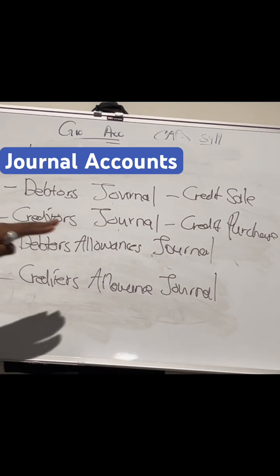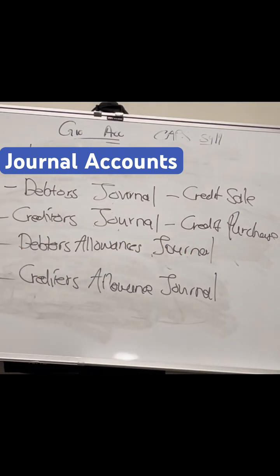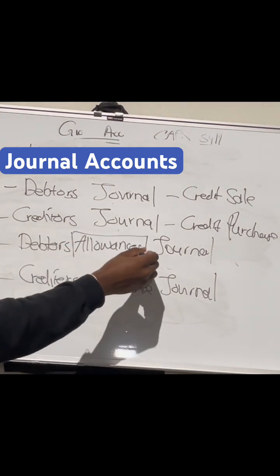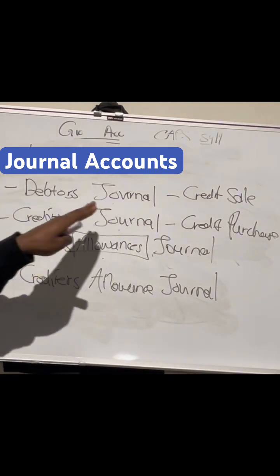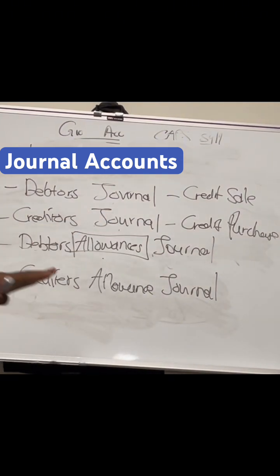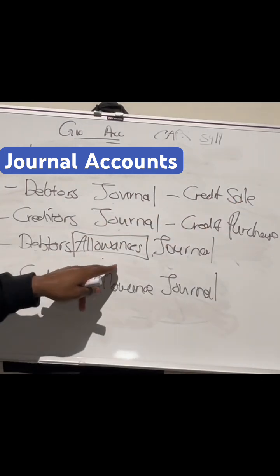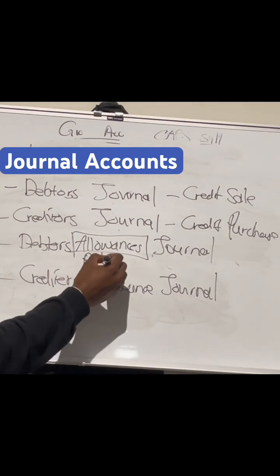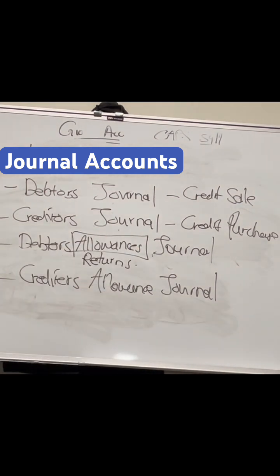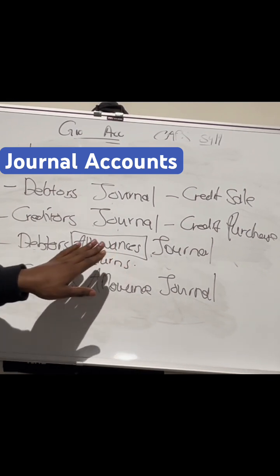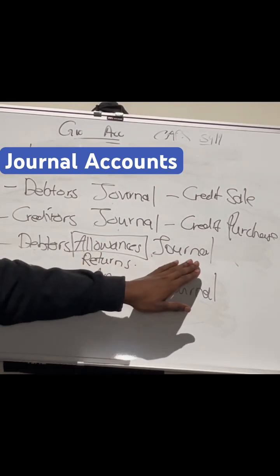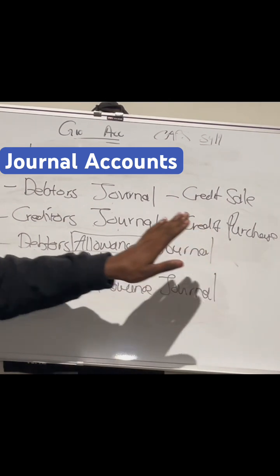And then we move on to the debtor's allowances journal — an allowance journal for the debtors. It's a debtor's journal, but we're looking at their allowances. What the allowances say is that a person who came to buy on credit is returning stock, so it's for returns. They are returning certain stock back to me, so they no longer have that liability to pay for those goods because they've returned it.